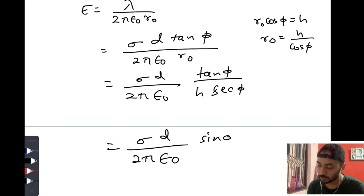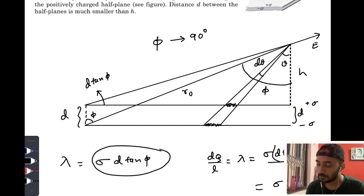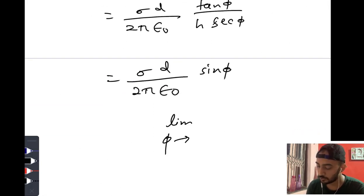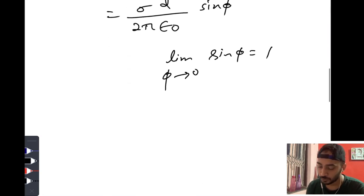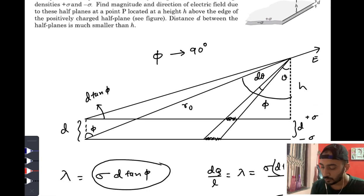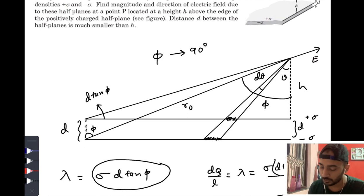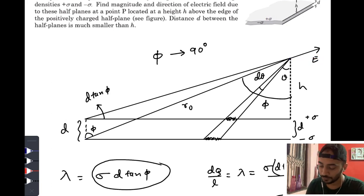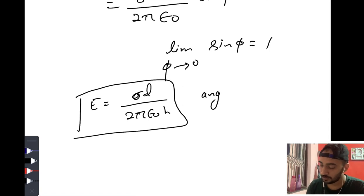Substituting r₀, we get E = σ·d·sin(φ) / (2πε₀·h). Taking the limit as φ → 90°, sin(φ) → 1, so the net electric field is E = σd / (2πε₀h). The direction: as you move further towards the left, this electric field vector becomes parallel to the planes and directed to the right, since it originates from the positive charge. So the field is directed rightward and parallel to the individual planes.